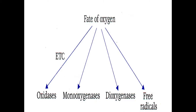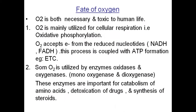Oxygen is carried by hemoglobin in the blood to various tissues. Looking at the fate of oxygen in the body: it is required for the electron transport chain, used by oxidase enzymes, required for monooxygenase and dioxygenase enzymes, and is responsible for the formation of free radicals in the body.